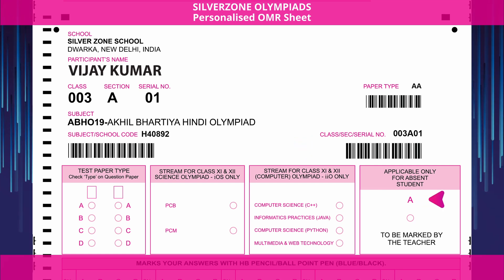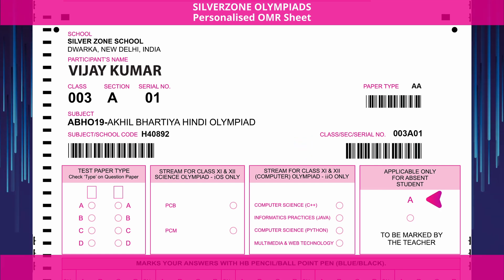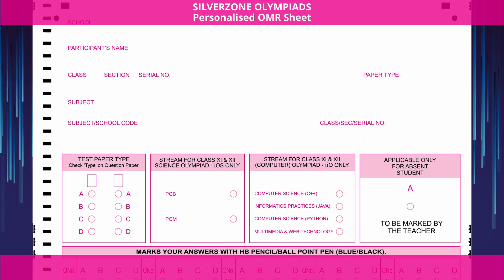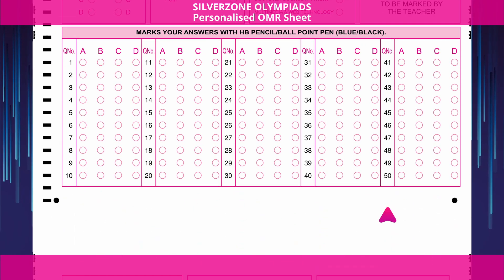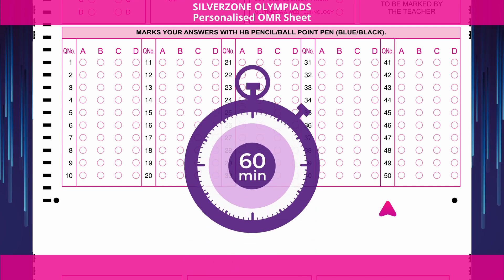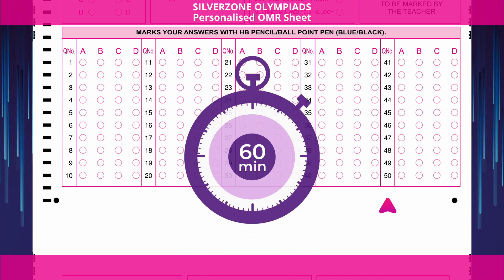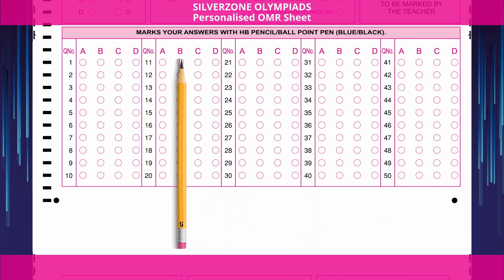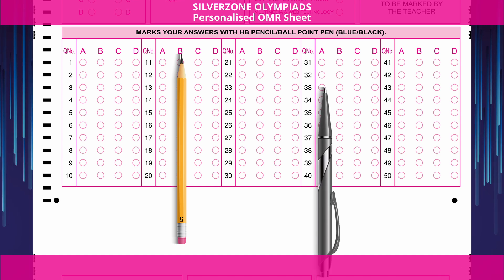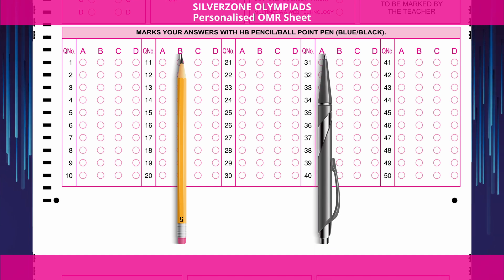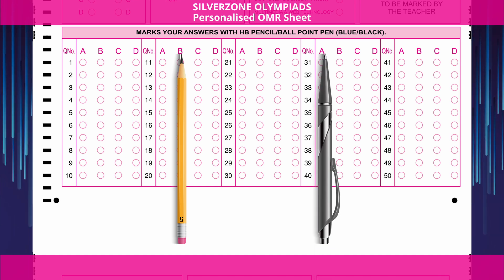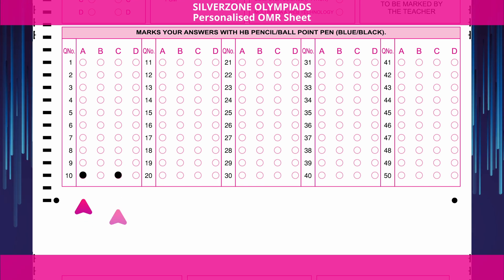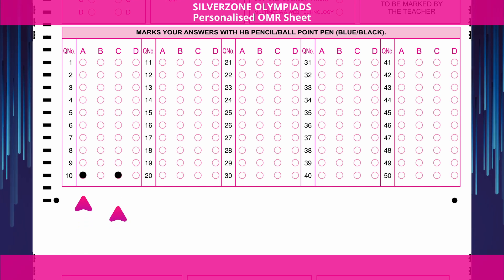The fourth box is applicable only for absent students, which is to be marked by the teacher. There are a total of 50 questions and the duration of the exam is 60 minutes. You may only use an HB pencil or a blue or black ballpoint pen to mark the answers. Highlighting multiple answers per question will be marked as wrong.